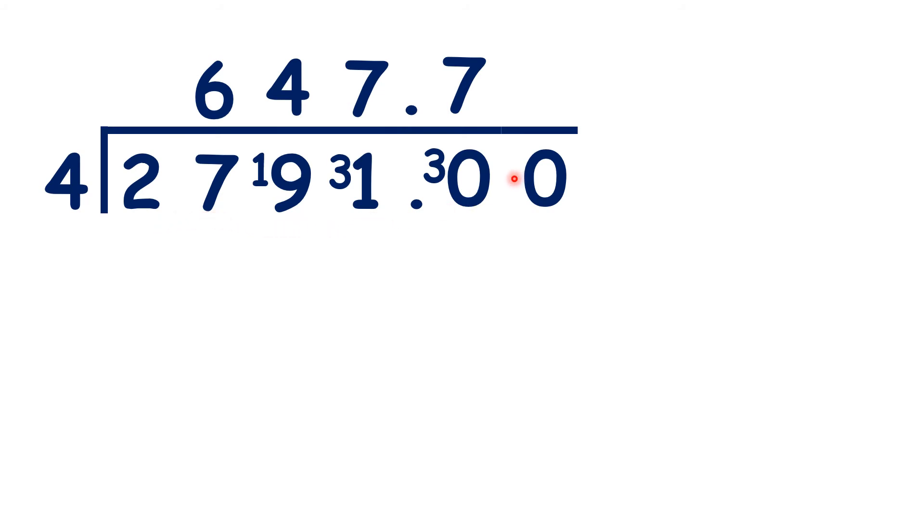So we haven't changed the question. But now we have somewhere to write our remainder 2. So now 20 divided by 4 is 5. So our answer is 647.75.